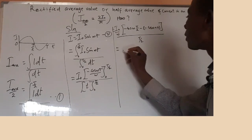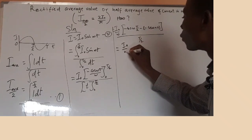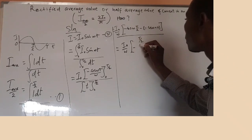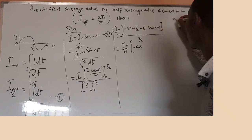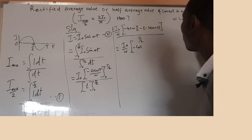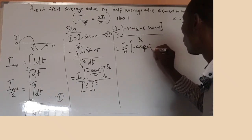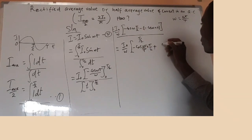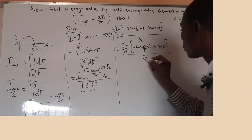From there, the next step: we have I₀ over ω, then open bracket, minus cos — and since ω equals 2π over T, we can write 2π over T. So we have minus cos(2π/T × T/2). Then minus times minus becomes plus, and ω times zero gives cos(0). Close bracket, all over T over two.